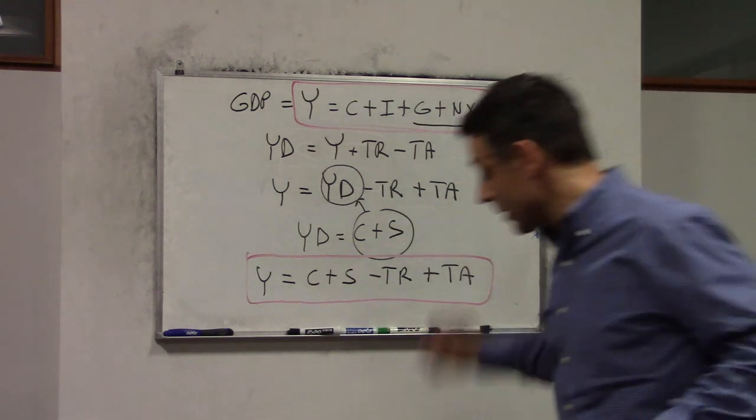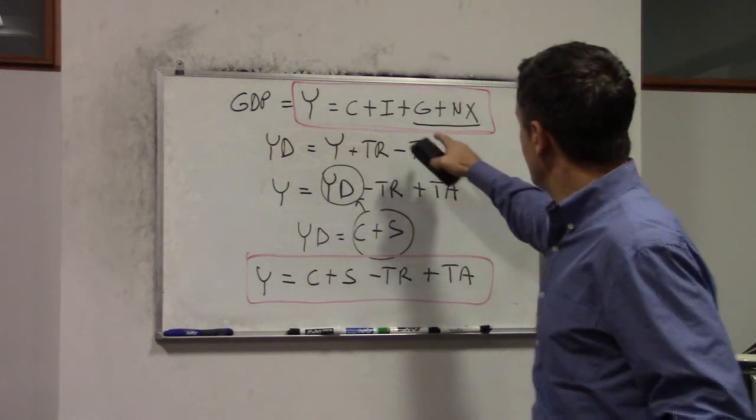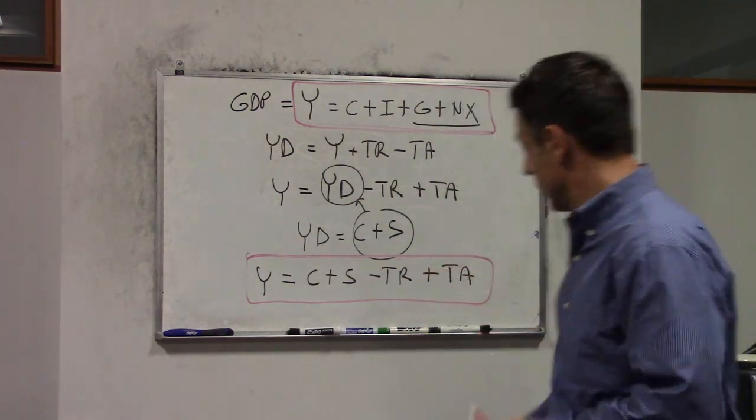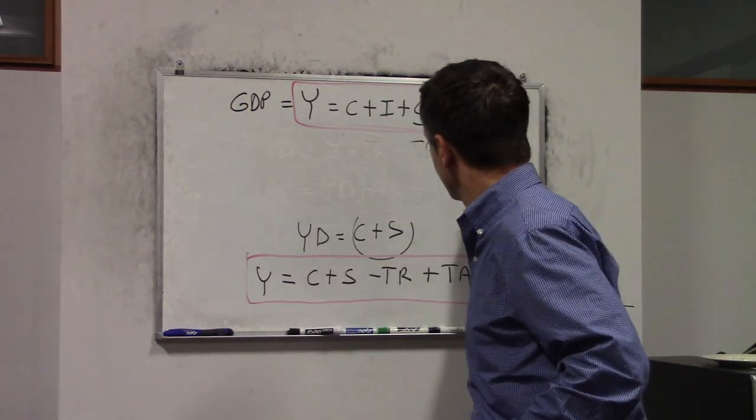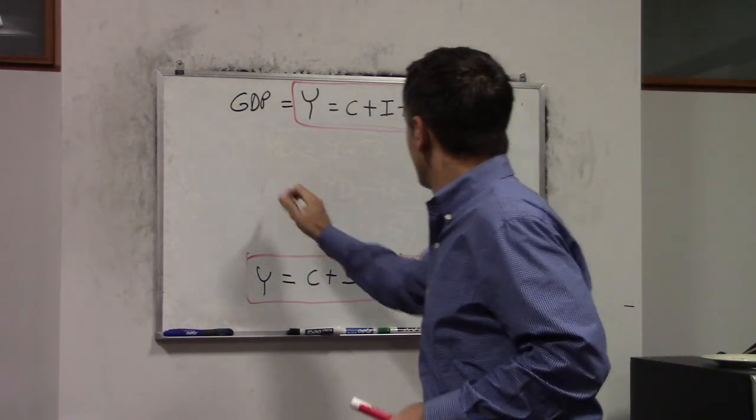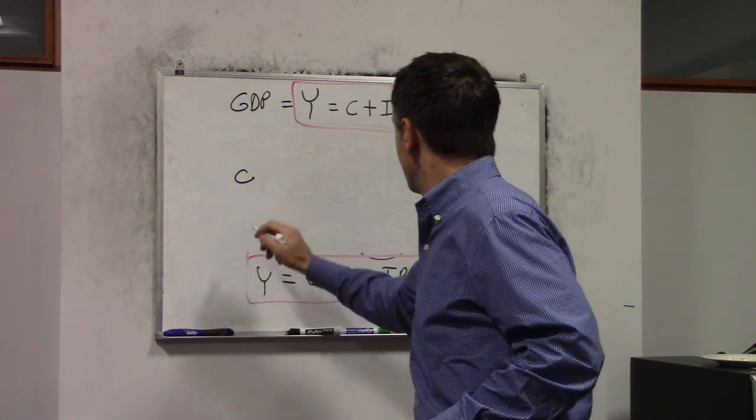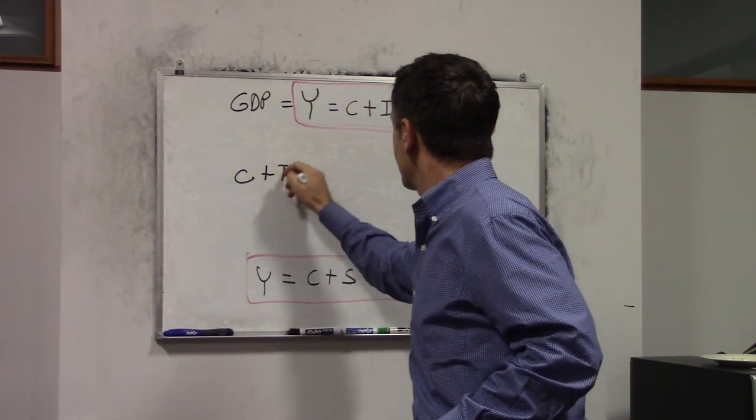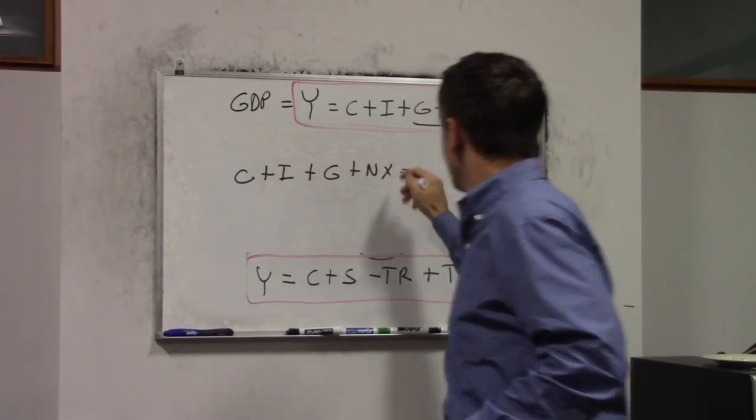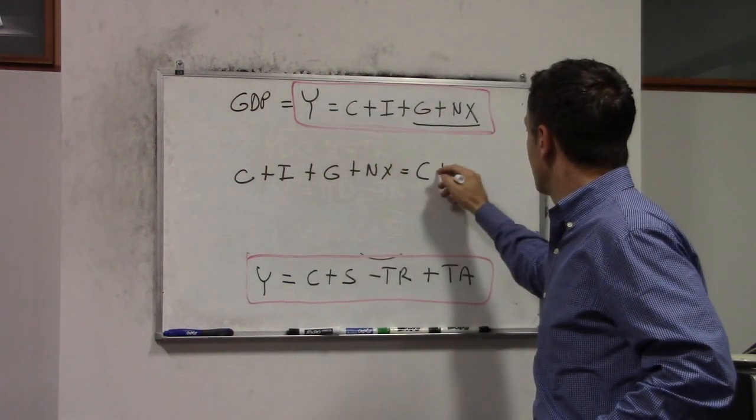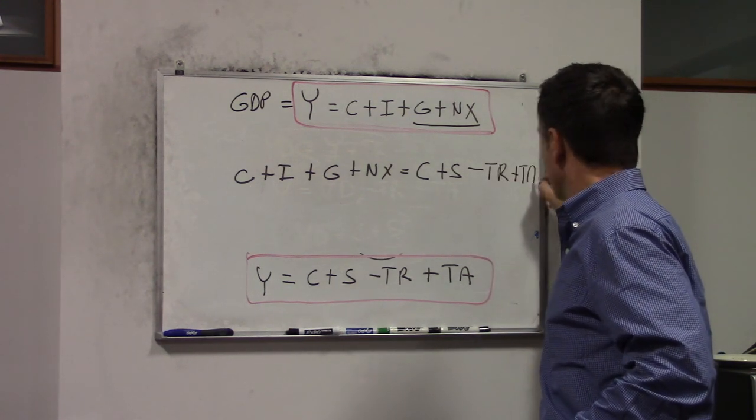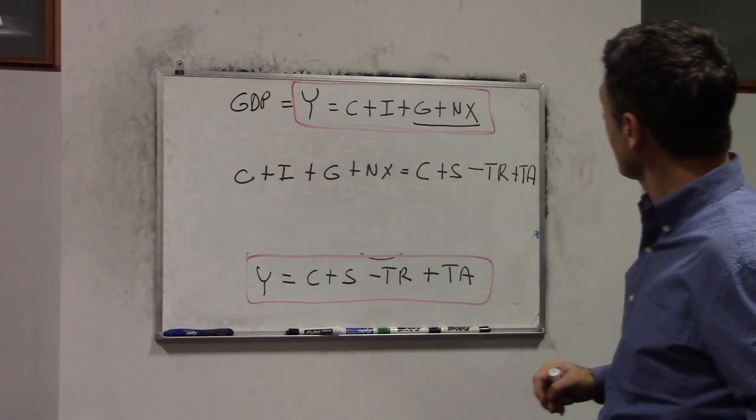I will try to leave those two expressions there, and I am going to say that this portion is equal to this portion here. Let's see what happens. So let's rewrite it in the middle. I can say that C plus I plus G plus NX is equal to C plus S minus TR plus TA.